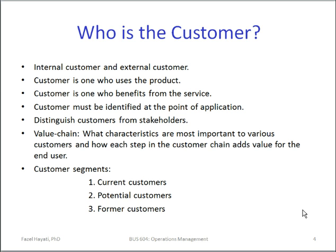Customers can be divided into three segments. First, our current customers — those who are currently purchasing our products and services. We have no guarantee that current customers will be our future customers; that depends on how we improve quality and innovate new products and services. Second, potential customers — those who are not buying from us now, or everyone who could become a customer of a new product or service, such as an iPod or iPhone. Third, former customers — those who, for one reason or another, are no longer doing business with us.